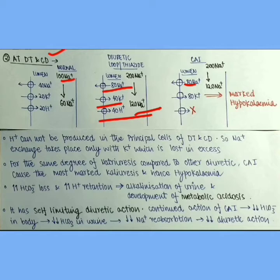So we can note H+ cannot be produced in the principal cells of DT and CD. So Na+ exchange takes place only with K+ which is lost in excess. Also we have taken such amount of diuretic loop diuretic thiazide and CAI that all will produce similar natriuresis.